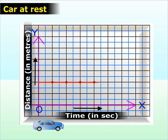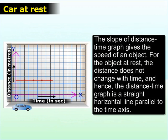Let us plot the distance-time graph for an object, say a car at rest. The slope of a distance-time graph provides the speed of an object. For an object at rest, the distance does not change with time, and therefore the distance-time graph is a straight horizontal line parallel to the time axis.